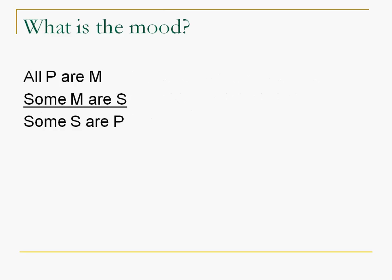So let's look at this. What is the mood? We've got all P are M, some M are S, some S are P. And notice, the predicate of the conclusion is in the first statement. This is the major premise. This is the minor premise because it has the subject of the conclusion. The convention is to name the subject of the conclusion S when we don't know, the predicate of the conclusion P, and M is the middle term which occurs twice.